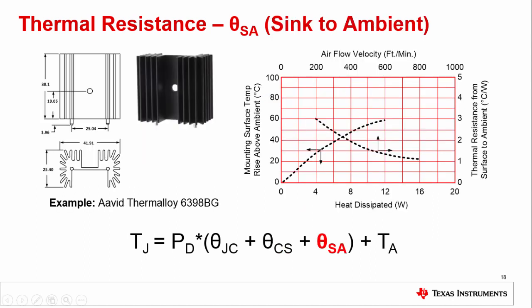The final thermal resistance to consider is the sink to ambient, or theta SA. This resistance is related to the thermomechanical design for the heat sink, which is provided in the heat sink data sheet. The thermal resistance of a heat sink is dependent on air flow, and may also be dependent on the power dissipated by the heat sink. The graph shown in this slide is a typical heat sink data sheet curve. Let's take a closer look and see how it can be used to determine theta SA.